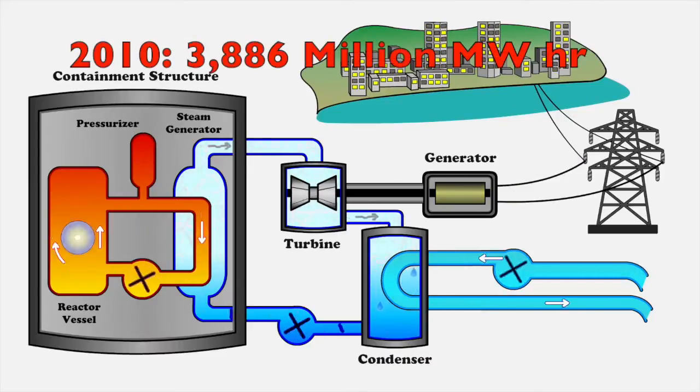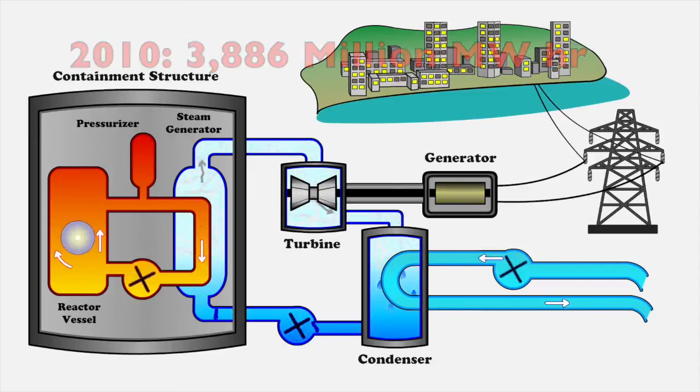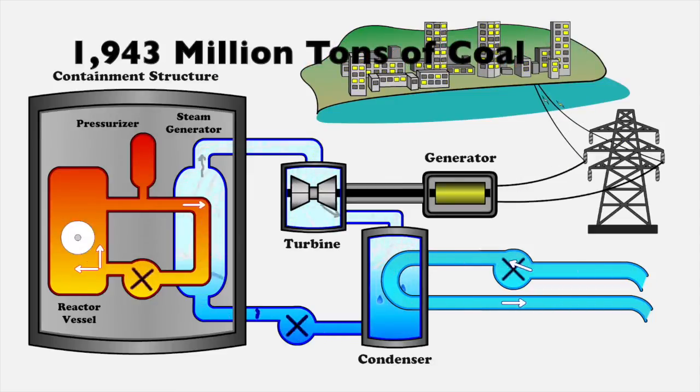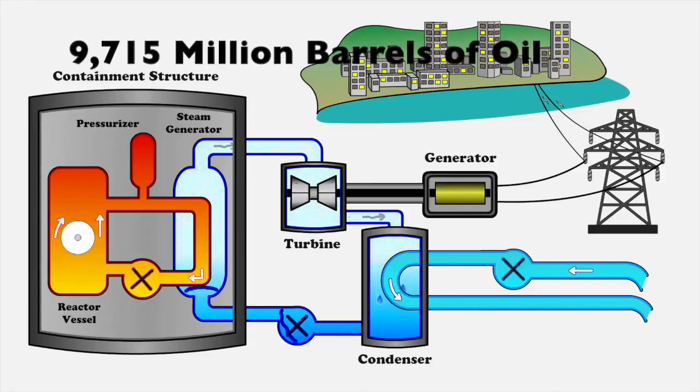For the entire year of 2010, the US produced about 3,886 million megawatt hours of electricity. This would require burning 1,943 million tons of coal or 9,715 million barrels of oil.